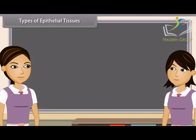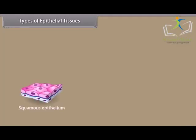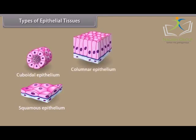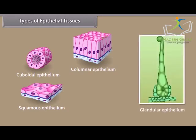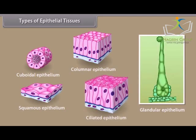Types of Epithelial Tissues: Epithelial tissues are classified into five types on the basis of functions and shape of the cells: Squamous Epithelium, Cuboidal Epithelium, Columnar Epithelium, Glandular Epithelium, and Ciliated Epithelium.